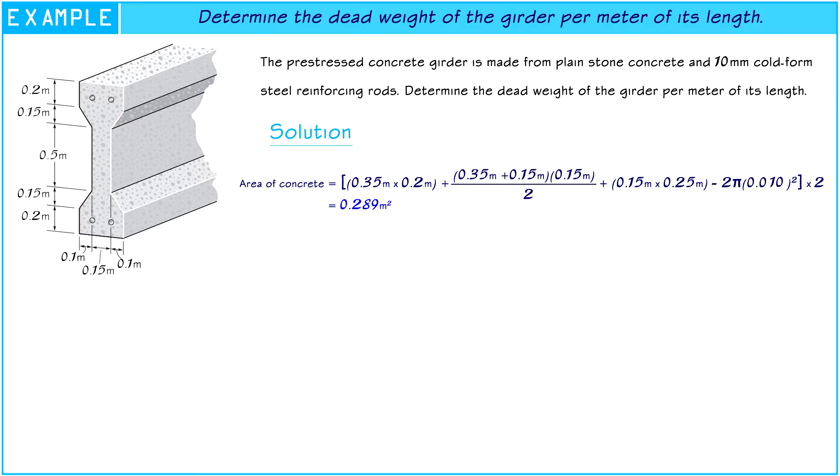Now we see the answer is 0.289 square meters. The area of steel is 0.001 square meters.